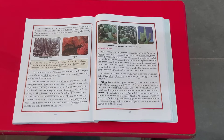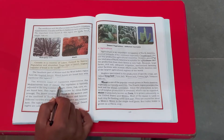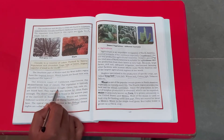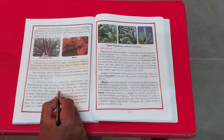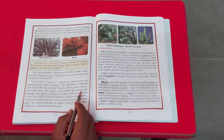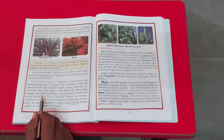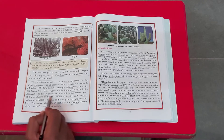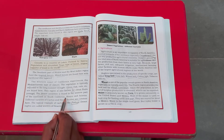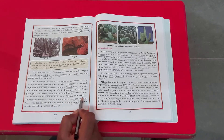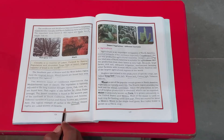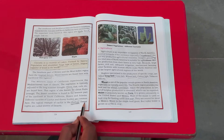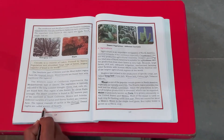The western coast, especially California, experiences the Mediterranean type of climate. The vegetation is typically adjusted with the long summer drought. Some citrus fruits are grown here — olives, oak, cork, and especially oranges. The desert condition is found in the western part of the continent since rainfall is less, especially in South California, Mexico, and Arizona. A typical example of cactus is the Joshua — one of the typical cactus names. Desert nights are called the winters of the desert.